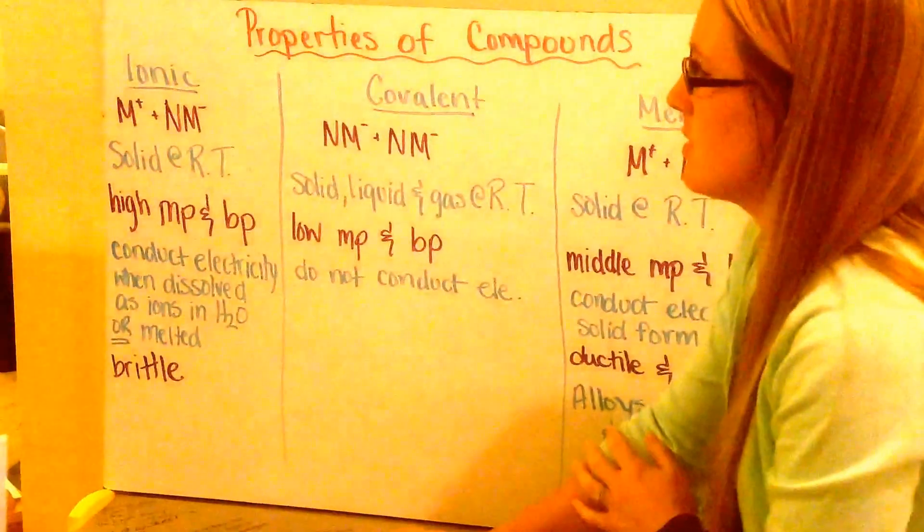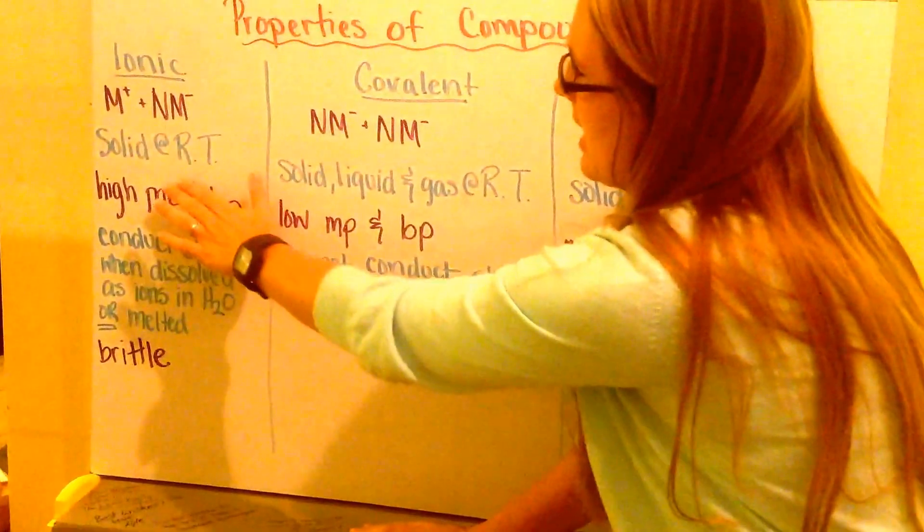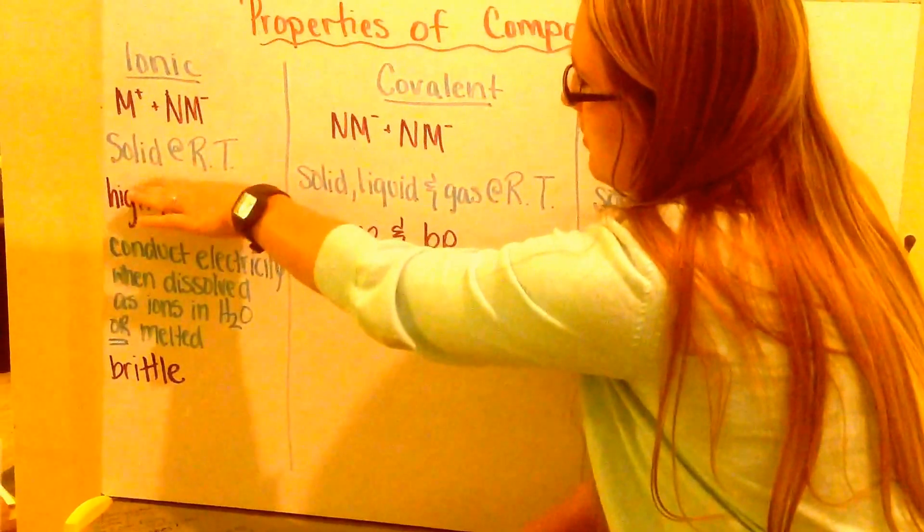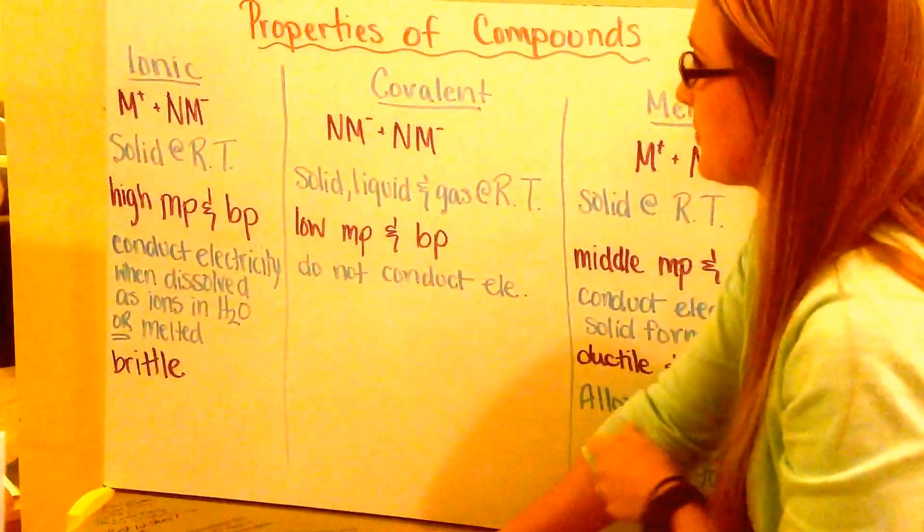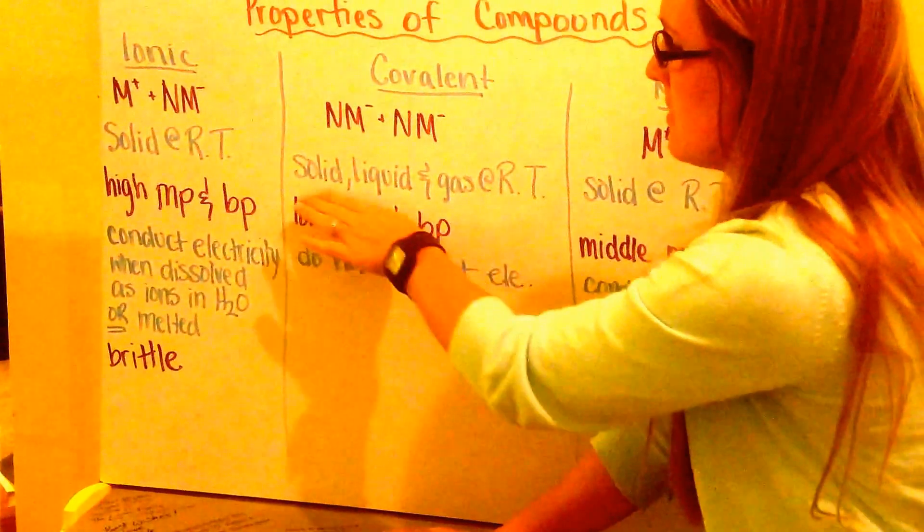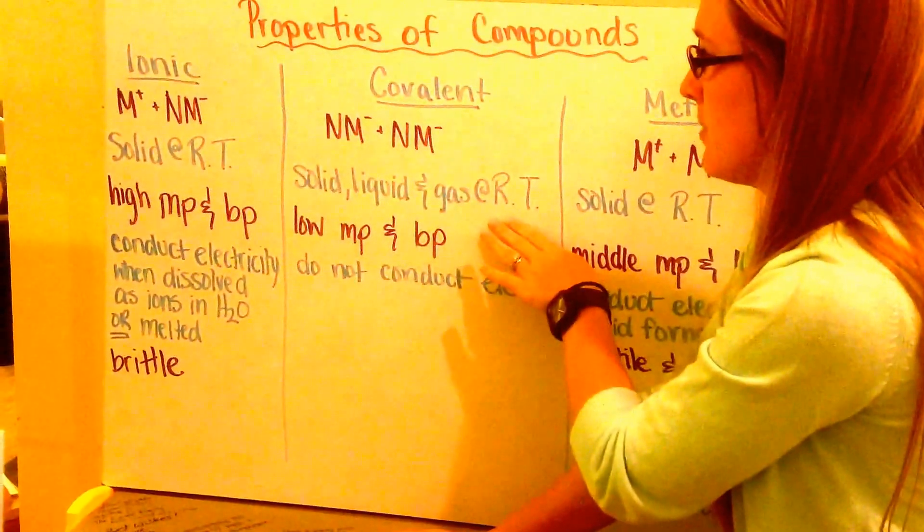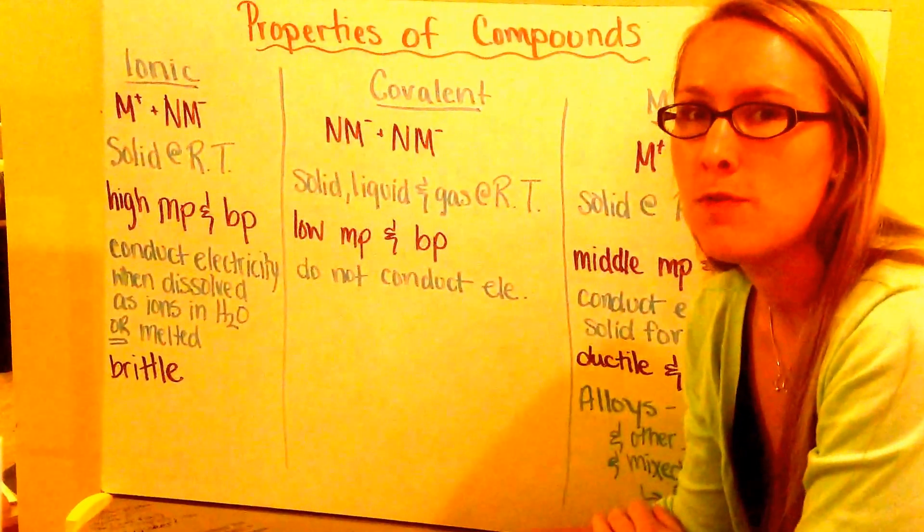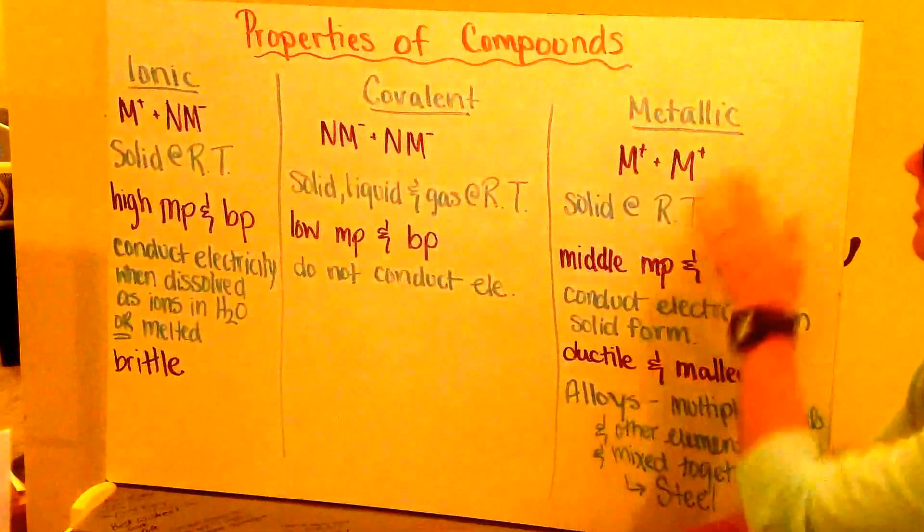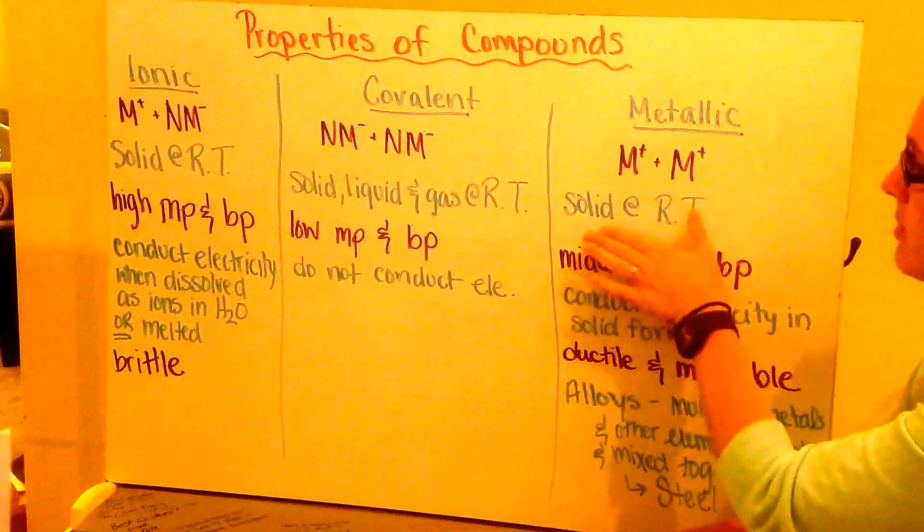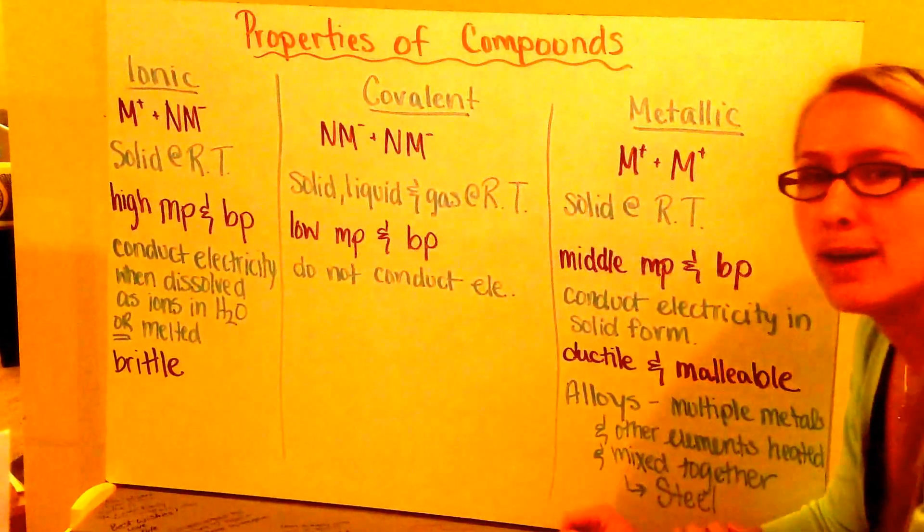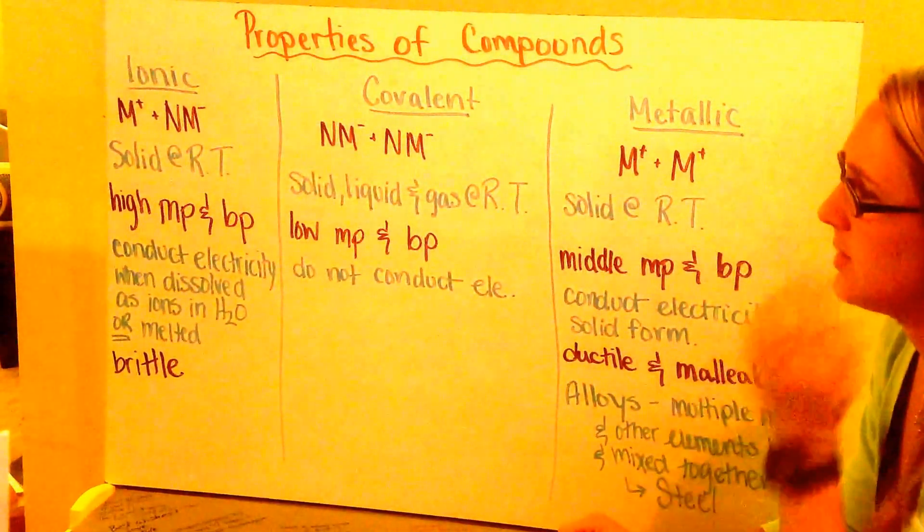Some of the different physical properties is that ionic compounds are going to be solid at room temperature. Think of things like salt. Covalent compounds can be a solid, liquid, or gas at room temperature, which makes sense because they're made up of all nonmetals. Metallic compounds are going to be solid at room temperature. They're just made up of metals, and we know that metals are solid at room temperature.